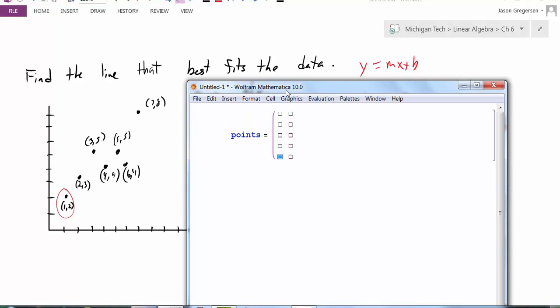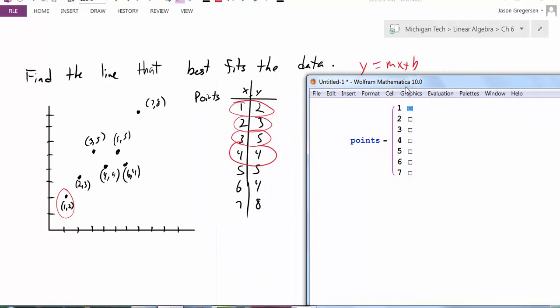2, 3, 4, 5, 6, 7 points. The x coordinates are going to be 1, 2, 3, 4, 5, 6, 7. And my y coordinates, if I can move over here and see my table, will be 2, 3, 5, 4, 5, 4, 8.